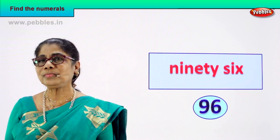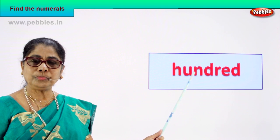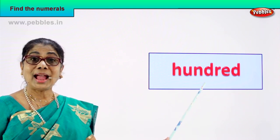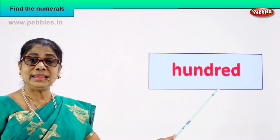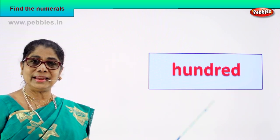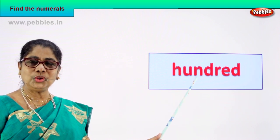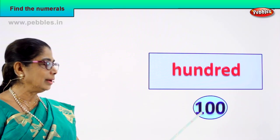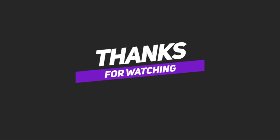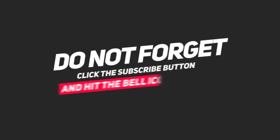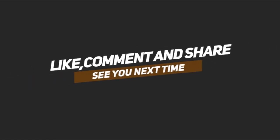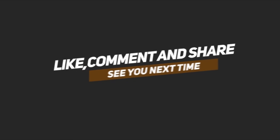Shall we go to another number name? Look, read on: H-U-N-D-R-E-D — what is it? 100. How many hundred? One hundred. How do you write one hundred? 1, 0, 0 — 100. That is how we write one hundred: 1, 0, 0 is 100.